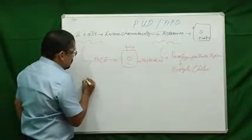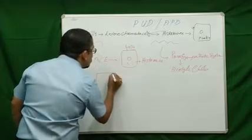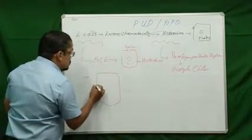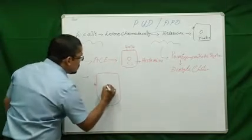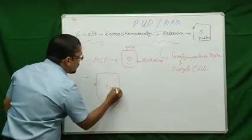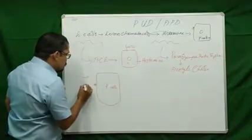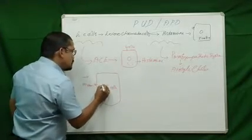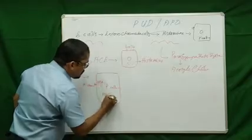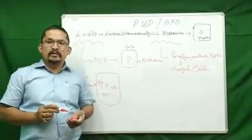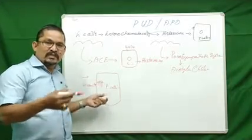And thereby the enterochromatin cells secrete a specific protein known as histamine. This histamine will attach with or travel and get attached with the specific receptor which is present in the parietal cells, and the presence of histamine causes secretion of hydrochloric acid.